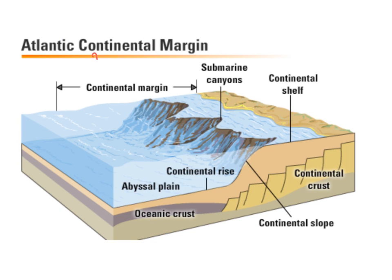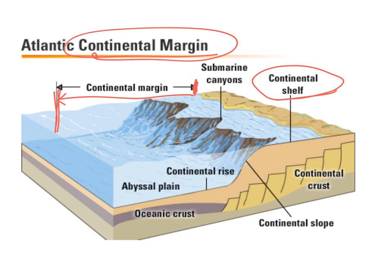The continental margin extends from the beach out into the abyssal plain a little ways, and can be broken down into three different regions. The first is the continental shelf — the shallow part of the ocean right next to the continent. It declines gradually and is not super steep, and this area is where we have a lot of productivity and where we do the bulk of our fishing. So they're very important regions.